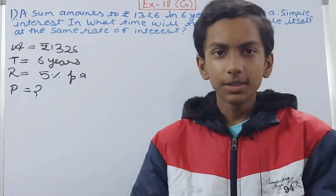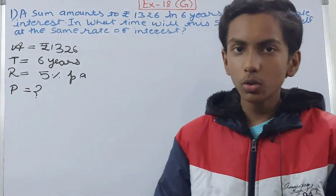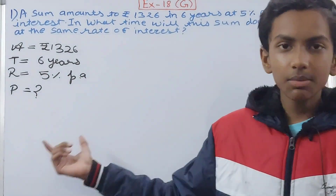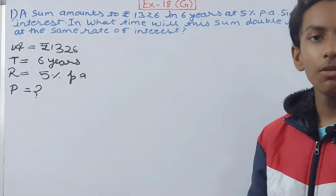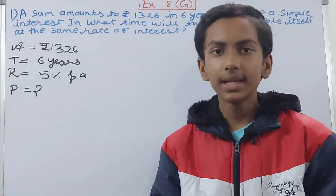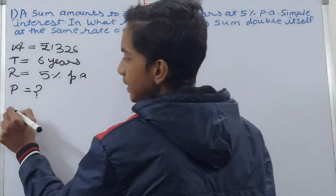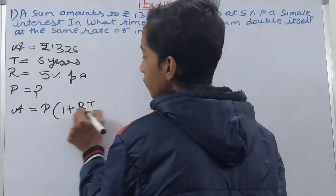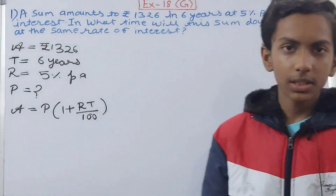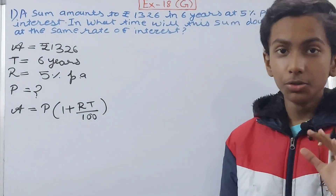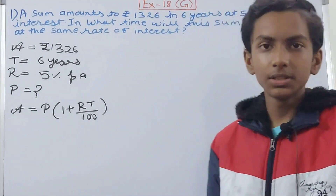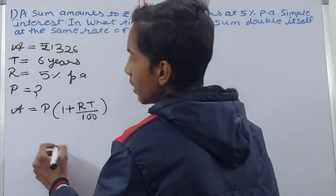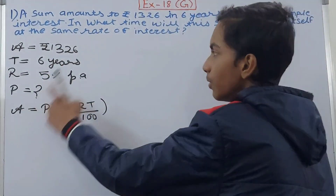Now think about which formula can be applied here — the simple interest formula or the amount formula. We don't know the simple interest, and we don't know the principal either, so using the simple interest formula would be wrong. We will use the formula for finding the amount: Amount = P × (1 + RT/100). You should learn the formulas thoroughly to know which one to apply where.